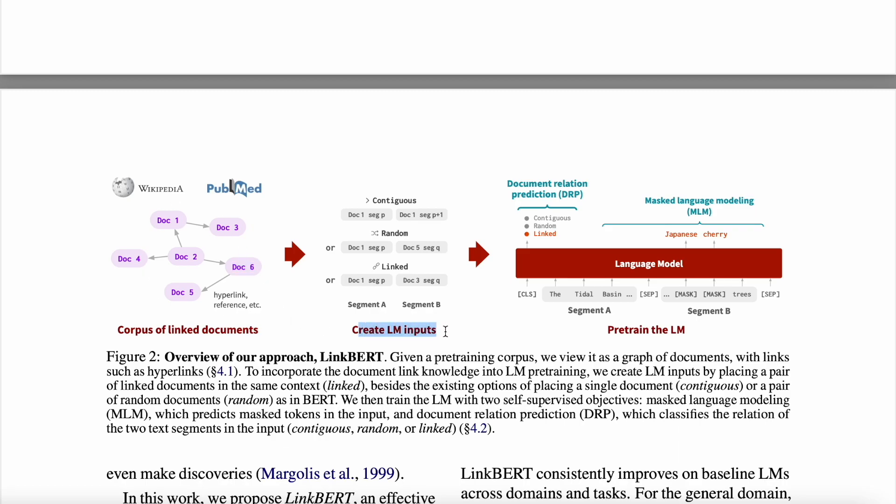So once we have this graph, we create input for our language model. Now those are created in three formats: we have contiguous, random, and linked. Contiguous is like same documents but different segments or sentences. So here a segment is what they treated as either a paragraph or a sentence—anything could be a segment. So two consecutive ones, which is the pth one and the one that's next to it, if we concatenate both of them with a separator token and give that as an input to the language model. Then we have random where the documents are totally different, so will the context of the segments be. So that is another way of creating the input.